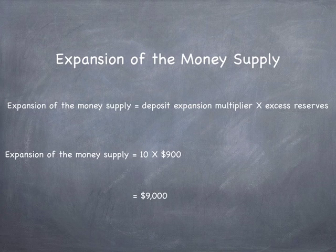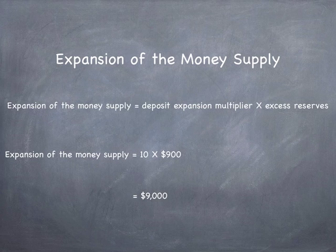To find the maximum amount of money that could be created, the formula is the deposit expansion multiplier times the excess reserves. The multiplier is 10, and excess reserves from the initial bank deposit are $900. So the potential expansion of money, M1, would be $9,000.